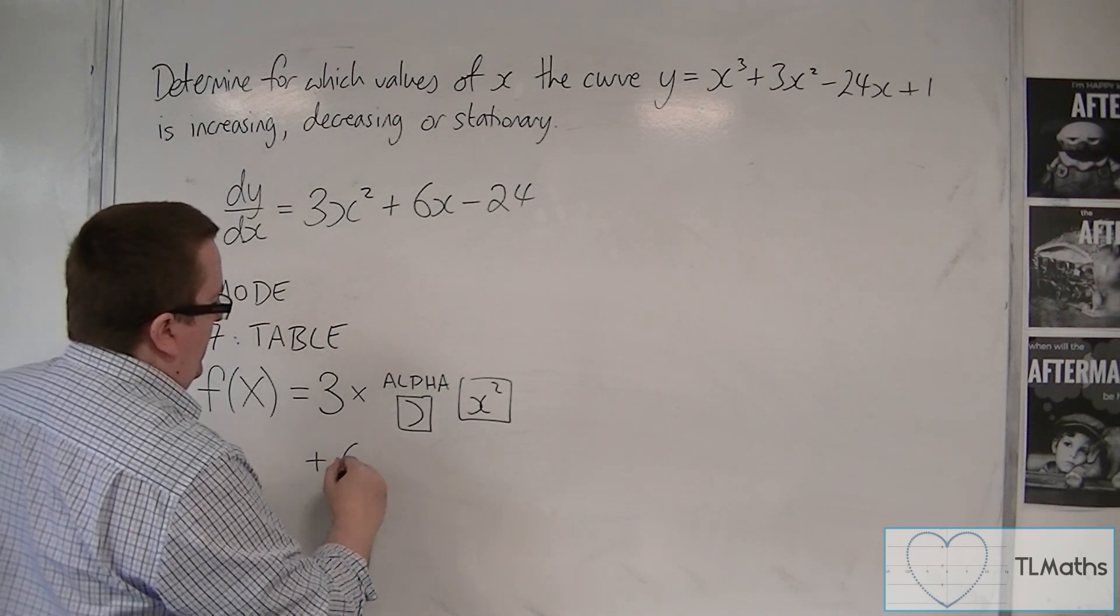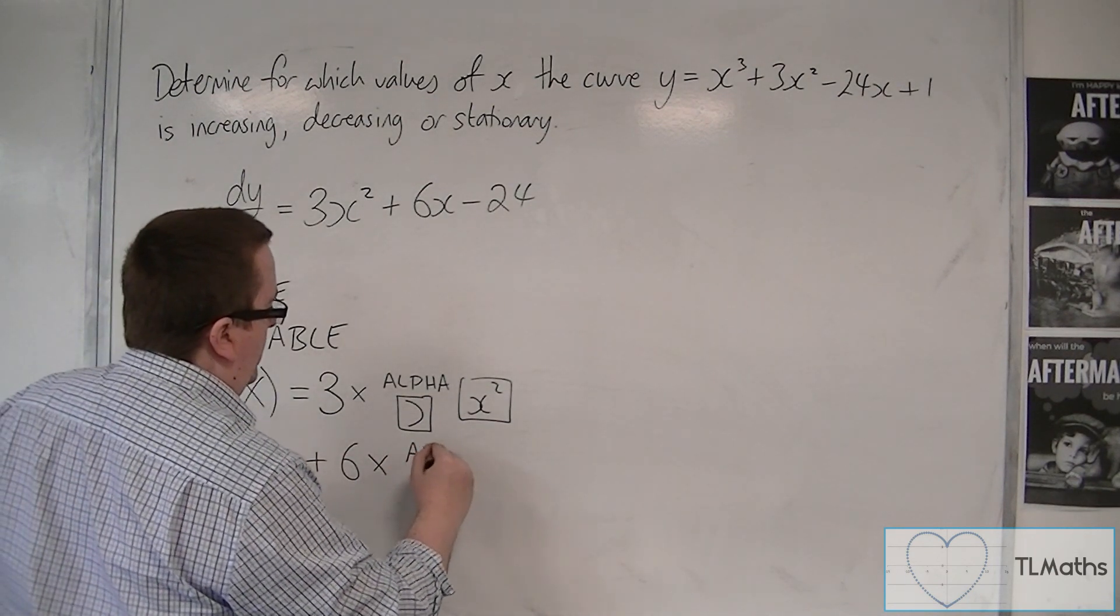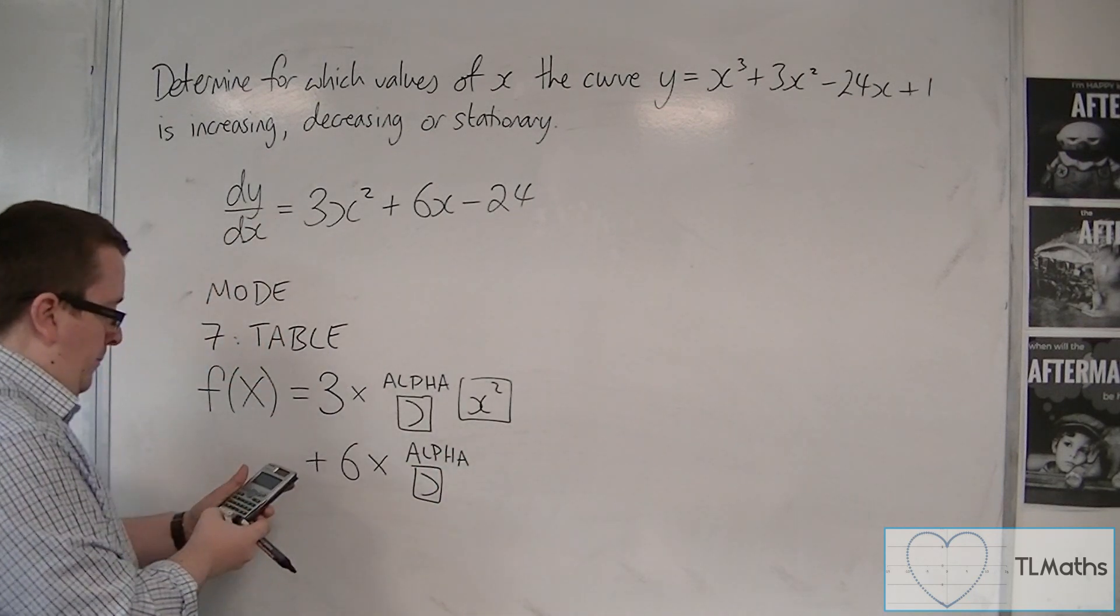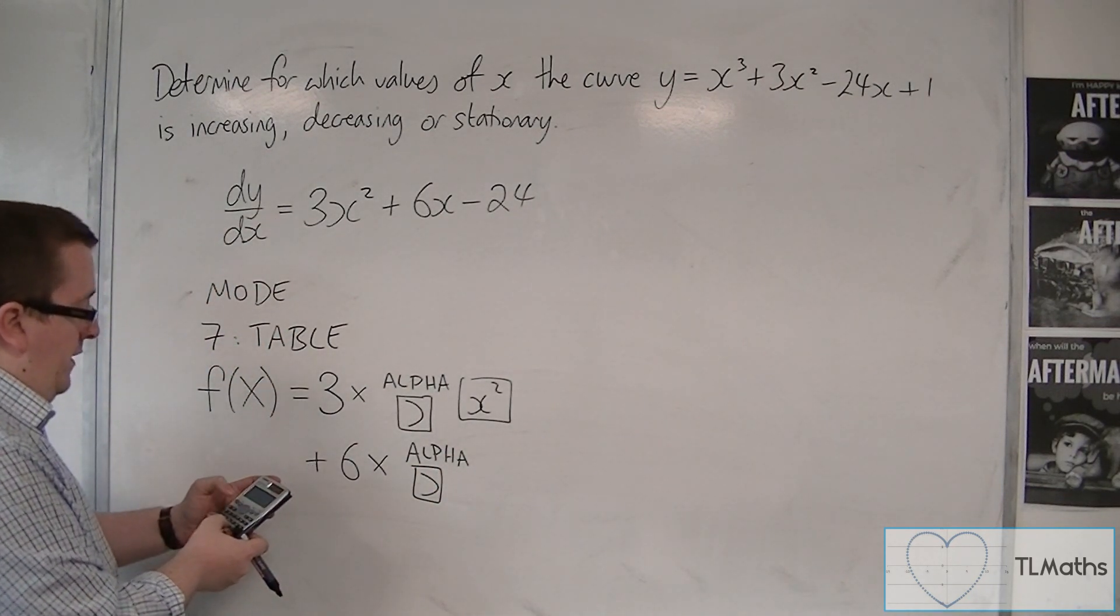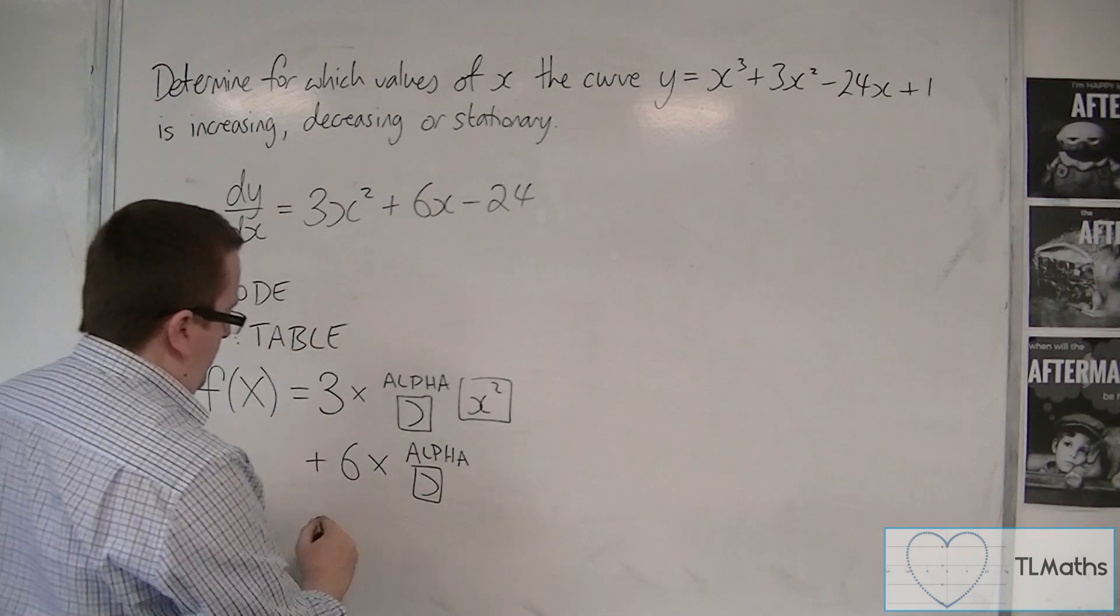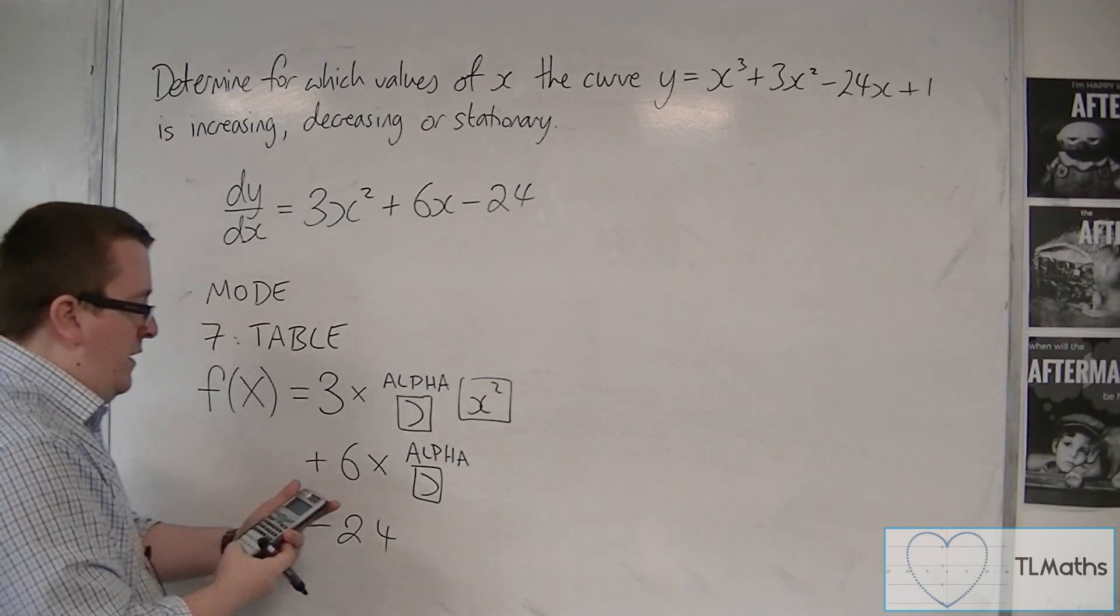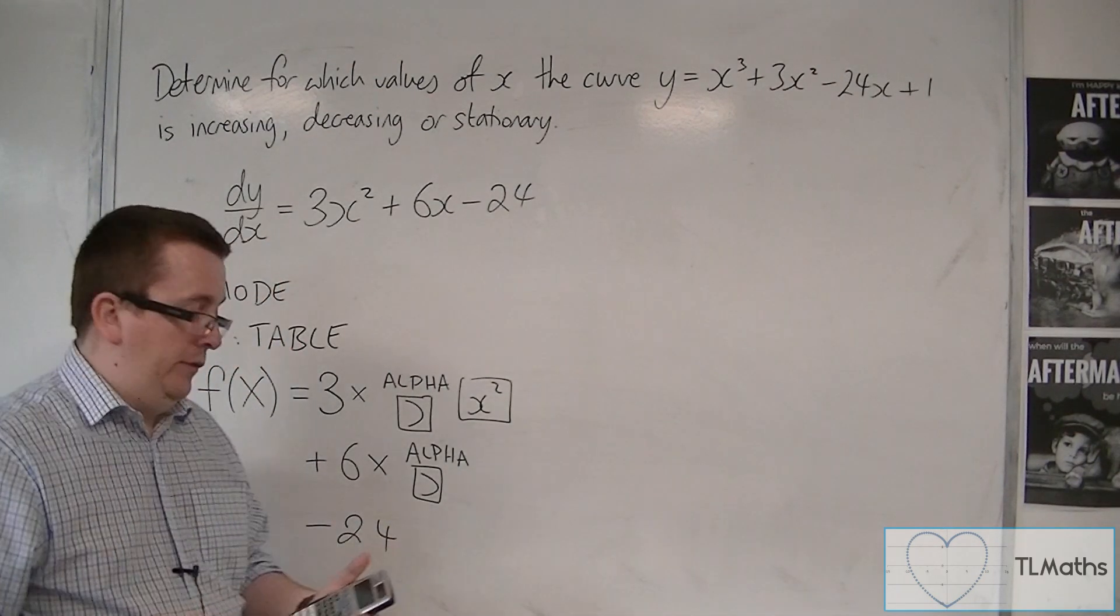Then we've got 6 times x, so we're going to use the same technique. So plus 6 times alpha x, and then take away 24. And then once you're there, press equals.